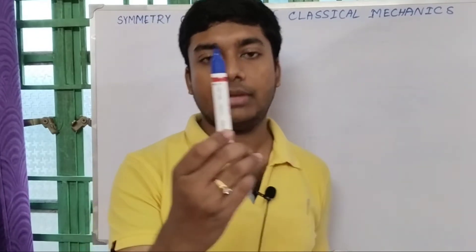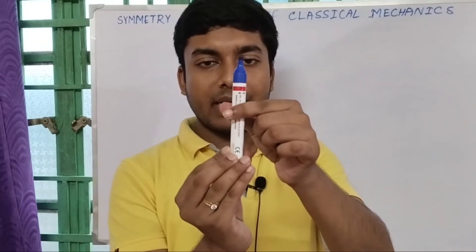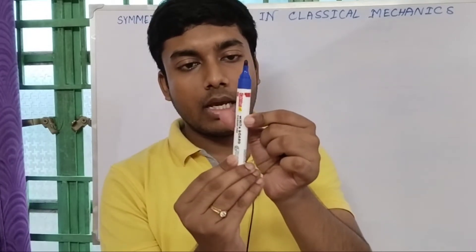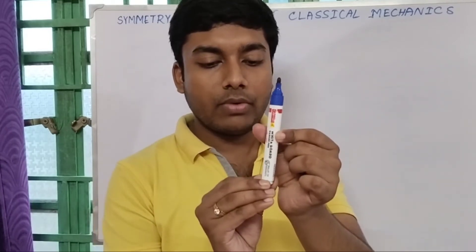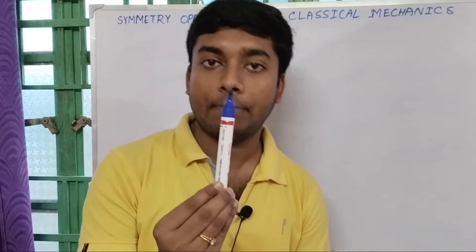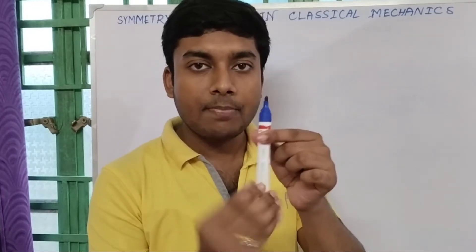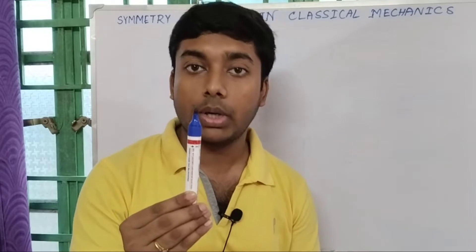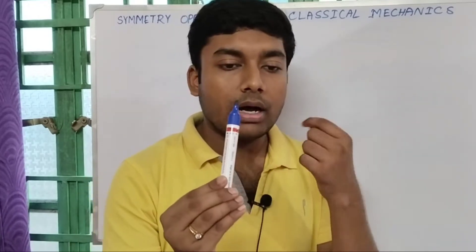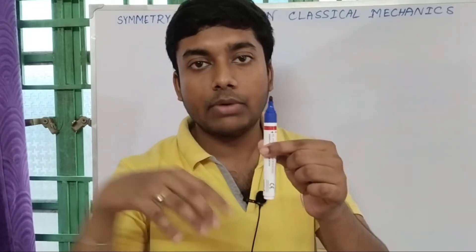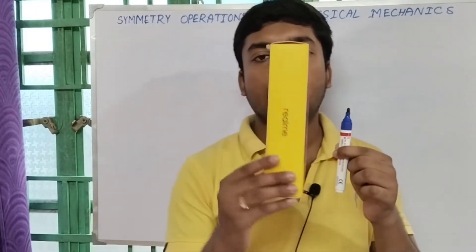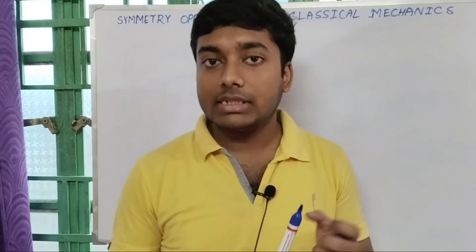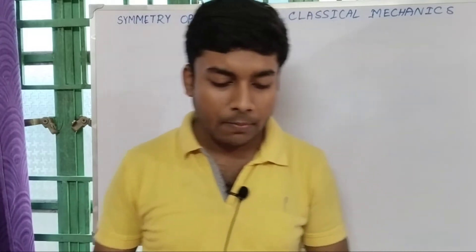But if we think of this pen — with no cap and no color — if I rotate it by any small, infinitesimal amount, it will just be the same as the initial state. That means we can continuously change the rotation angle and it will remain the same. So this type of symmetry is continuous, as we can continuously change the infinitesimal amount of angle. For the box, the rotational symmetry is not continuous — it is discrete.